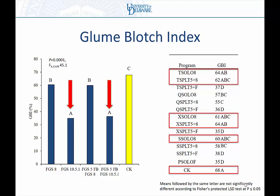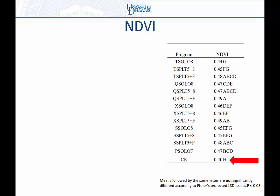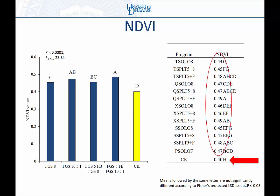For NDVI, all the fungicide programs resulted in greener, healthier plants — though we had disease, so we can't claim it was due to a plant health benefit alone. Numerically, the values were tight but there was some separation between programs. Looking at collapsed timings, all application timings resulted in significantly higher NDVI. The flowering application resulted in the highest NDVI compared to the flag leaf or early plus flag leaf applications, but not by a large margin.